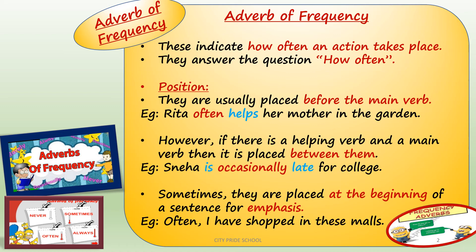The position of adverb of frequency: it is placed before the main verb. If there is a helping verb, then it is placed between the helping verb and the main verb — so technically it is still before the main verb. For example, 'Rita often helps her mother in the garden' — 'often' comes before the main verb 'helps.' In 'Neha is occasionally late for college,' 'occasionally' comes between the helping verb 'is' and the main verb 'late,' so it is still before the main verb.